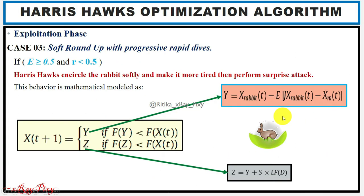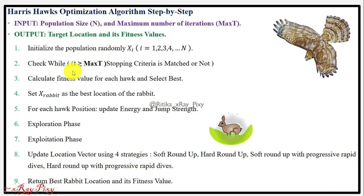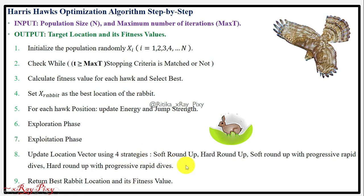In summary, the Harris Hawks Optimization algorithm initializes the population, checks the stopping criteria, computes fitness values, sets the rabbit position, treats the candidate solutions as hawks and the best solution as the rabbit, and performs exploration, exploitation, and four attack strategies to update positions for both the hawk and rabbit in the search space. In the end, we return the rabbit location and its fitness value. If you have any questions, comment below.